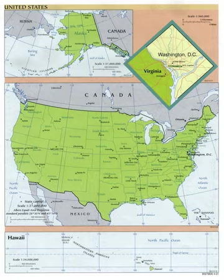Once a territory becomes a state of the union, the state must consent to any changes pertaining to the jurisdiction of that state. The only potential violation of this occurred when the legislature of Virginia declared the secession of Virginia from the United States at the start of the American Civil War, and a newly formed alternative Virginia legislature, recognized by the federal government, consented to have West Virginia secede from Virginia.